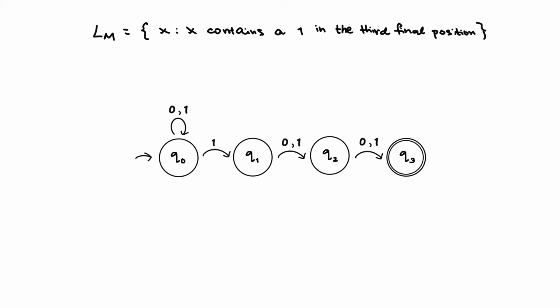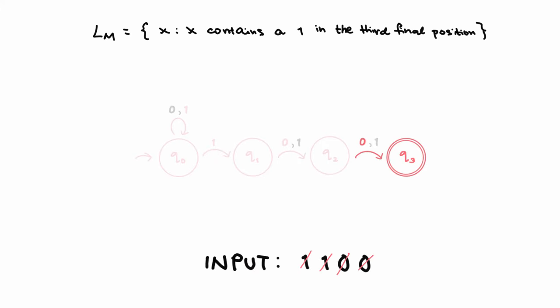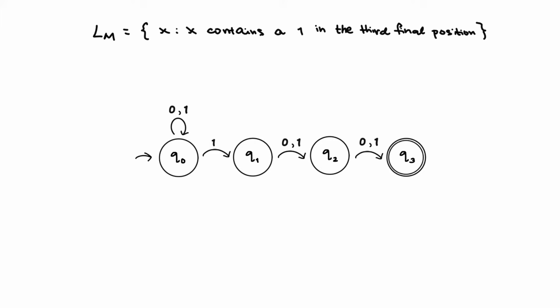However, like the DFA, it still accepts 111, and it also accepts 1100. You might have noticed how it also could have rejected 111 and 1100 by choosing to remain in Q0 the entire time. And you aren't wrong.